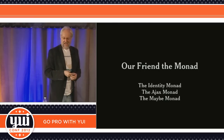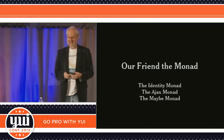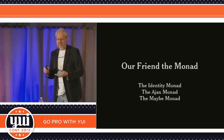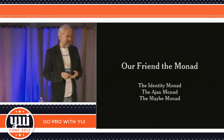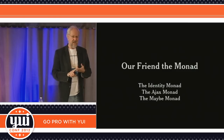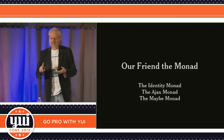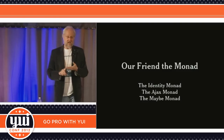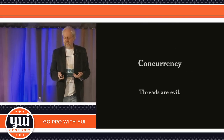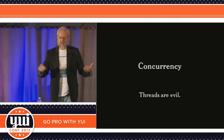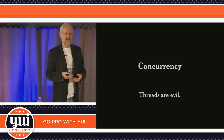So our friend the monad. We've seen three monads now: the identity monad, which is kind of useless but it's the first one you have to do in order to understand it — you certainly don't want to start with the IO monad because it just won't make any sense. Then the Ajax monad and the maybe monad. That's all I've got about monads, and there's still a lot of time. So I'm going to talk about concurrency.